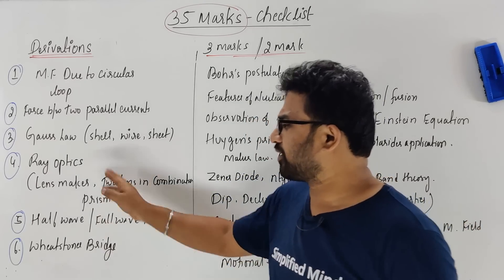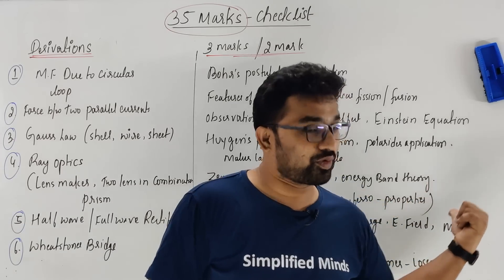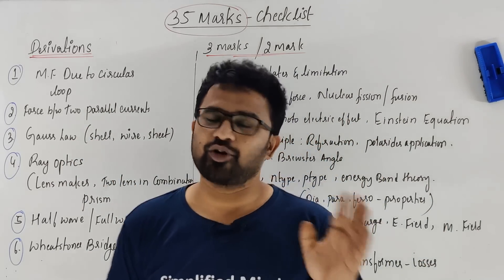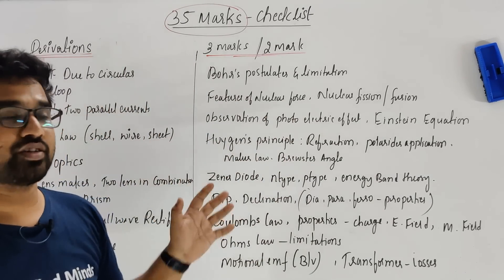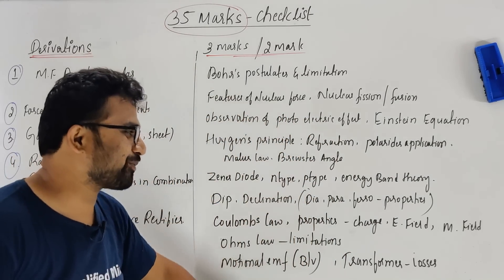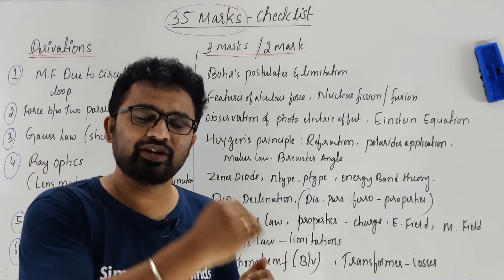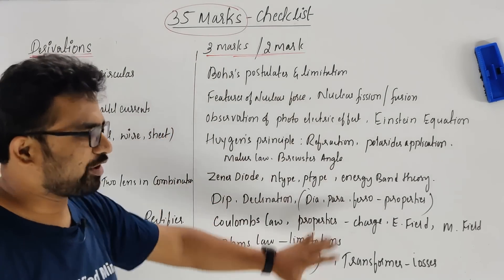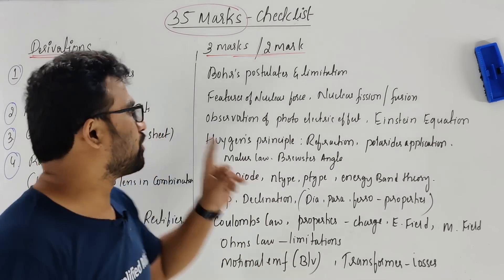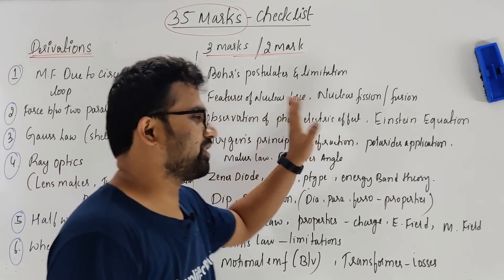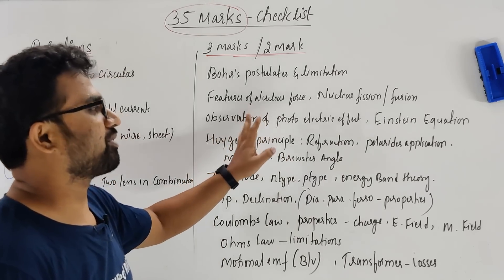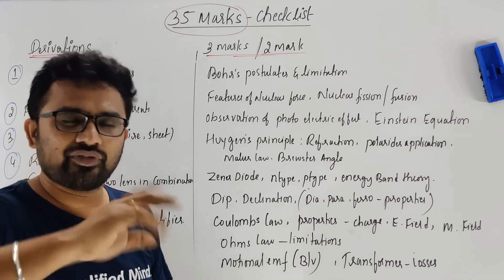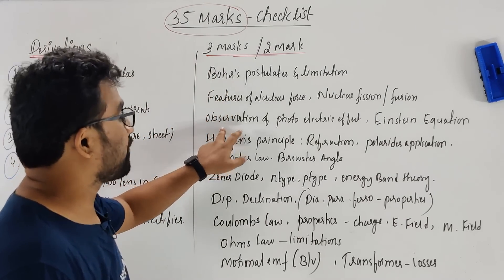Don't get tensed. Also, for photoelectric effect observations — three marks are there. Coming to three markers and two markers asked in physics, I've written only these minimum basic topics. This video is for someone who thinks they're going to fail. For the boards I have taken easy topics — Bohr's postulates and limitations, features of nucleus, nuclear fission and fusion, observations of photoelectric effect. For atoms and dual nature, you can just skip for now.